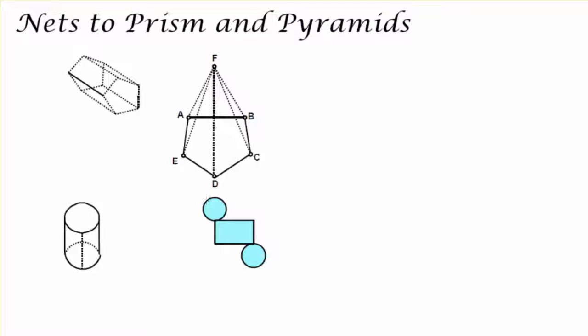Now look at the example of a cylinder. A cylinder does not have polygon bases, but I still have two identical circles on the top and one lateral area rectangle that wraps around at the edge to make a cylinder.